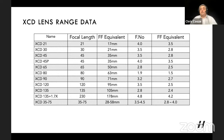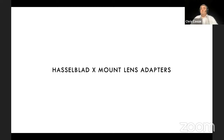The 80mm f/1.9 is great for portraits, the 90mm also has a fast aperture, and the 120mm is a macro lens offering 1:2 magnification. The range provides something for everybody.